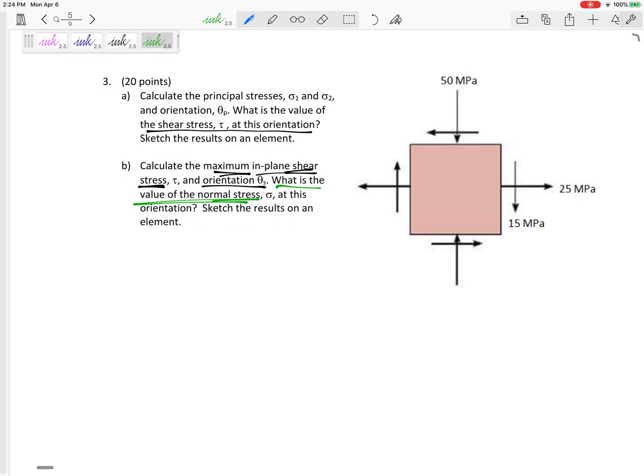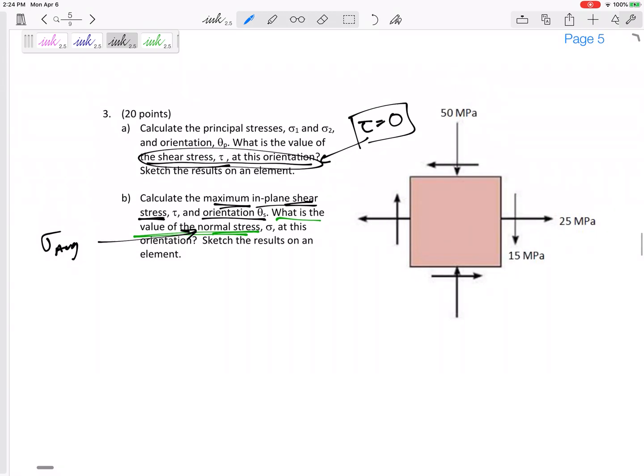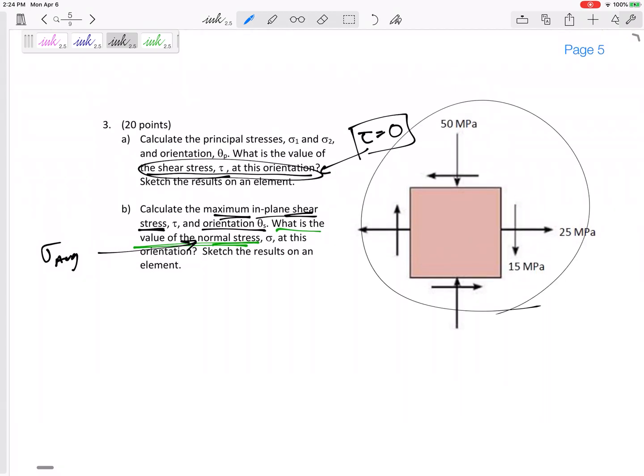What is the shear stress when we have principal stresses? The shear stress is zero right here. But what is the normal stress when you have the maximum in-plane shear stress? The normal stress is sigma average of sigma y and sigma x.